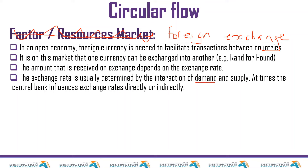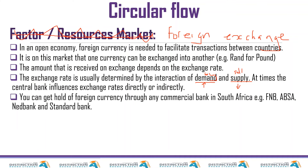When people feel like something is good for the economy, they demand more rand and the rand goes up. When people feel like something is bad for the economy, they sell the rand and it goes down. You can get hold of foreign currency through any commercial bank — we call that a bureau de change. You'll find that FNB, Absa, Nedbank, Capitec, and Standard Bank all have these bureaux de change.